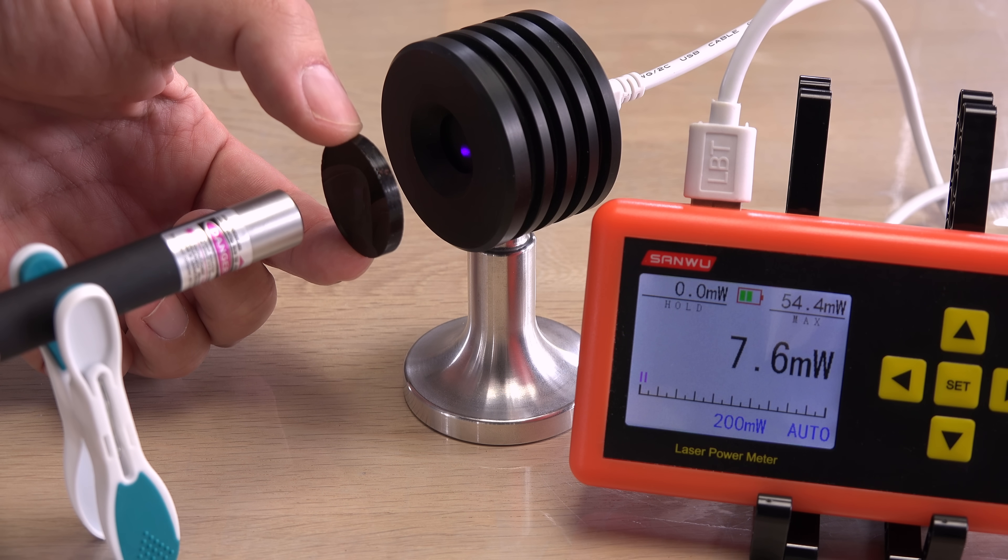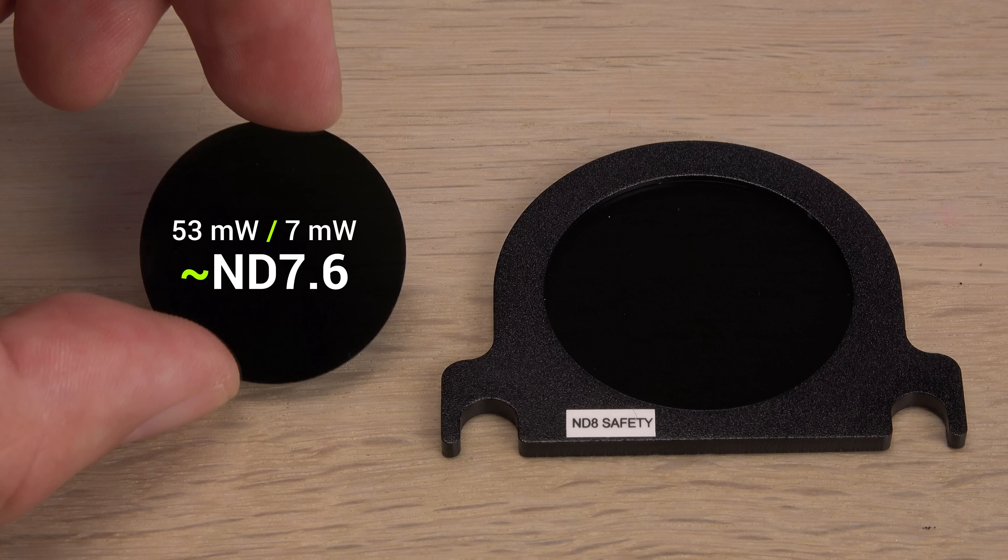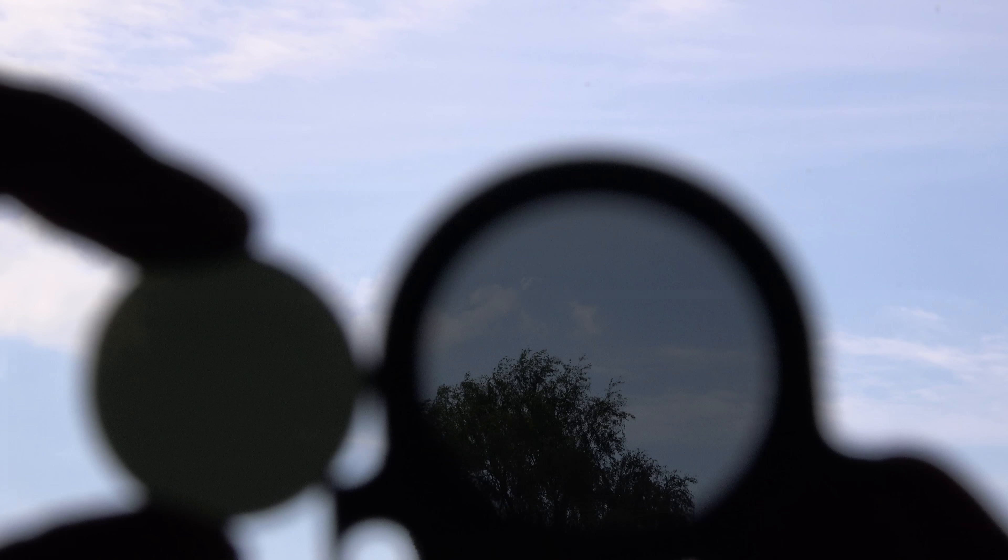Huh, I did not expect this. It lowers the beam's power less than the ND8 filter. It is equal to around ND7. Weird. I could have sworn it would do better.